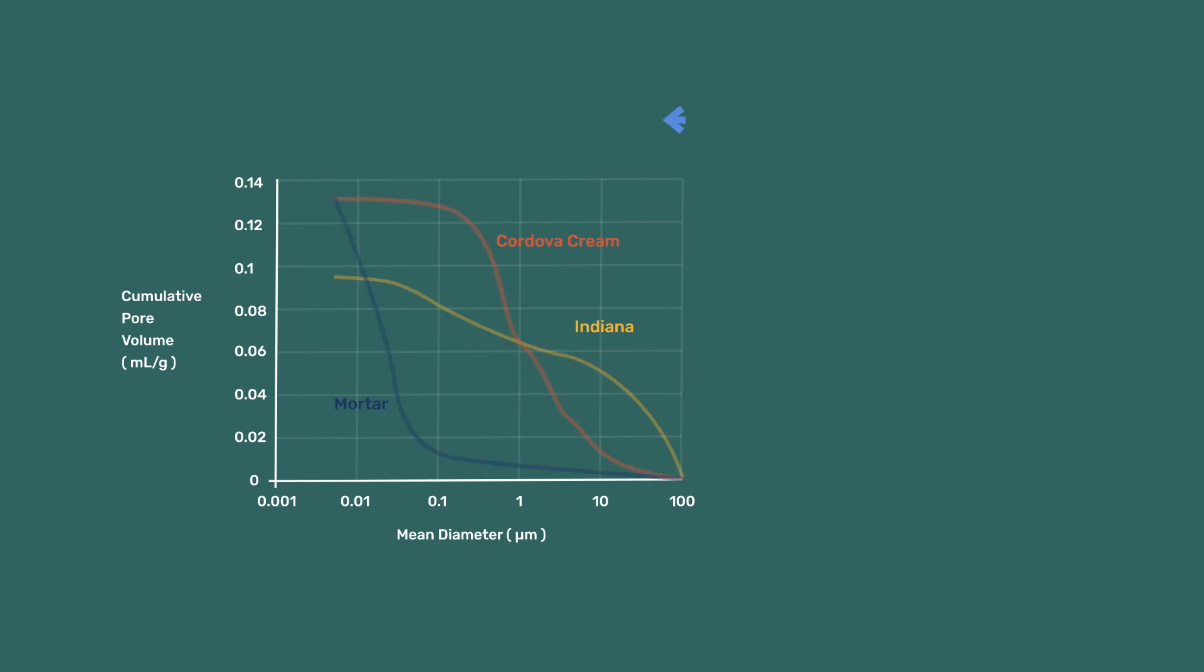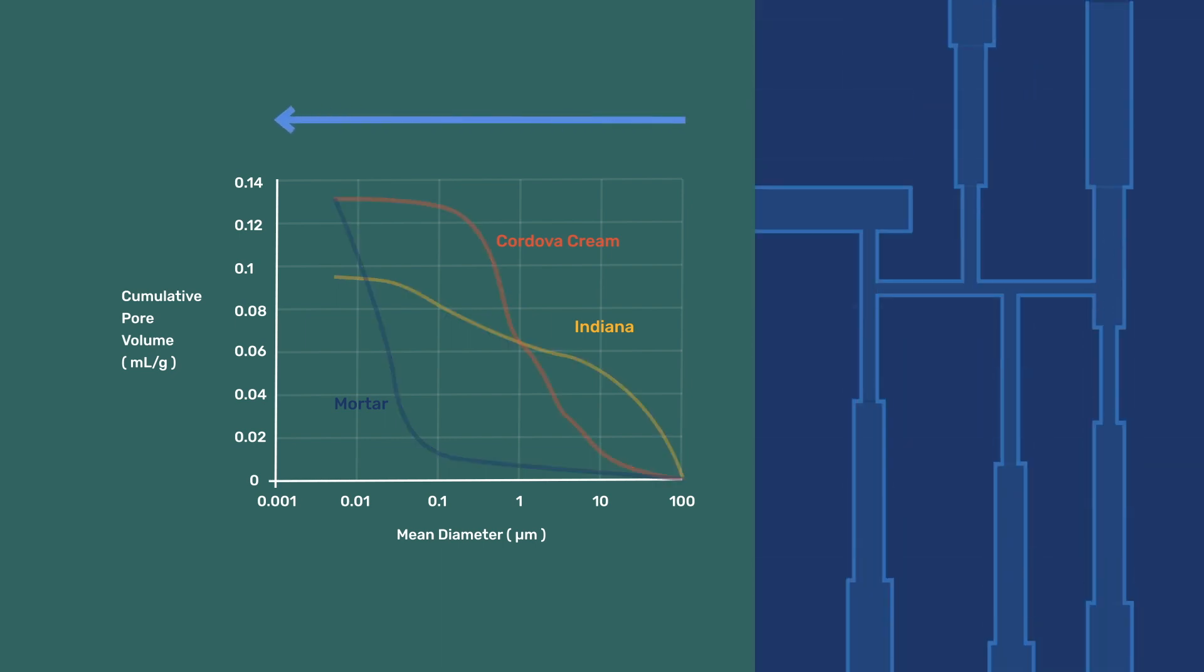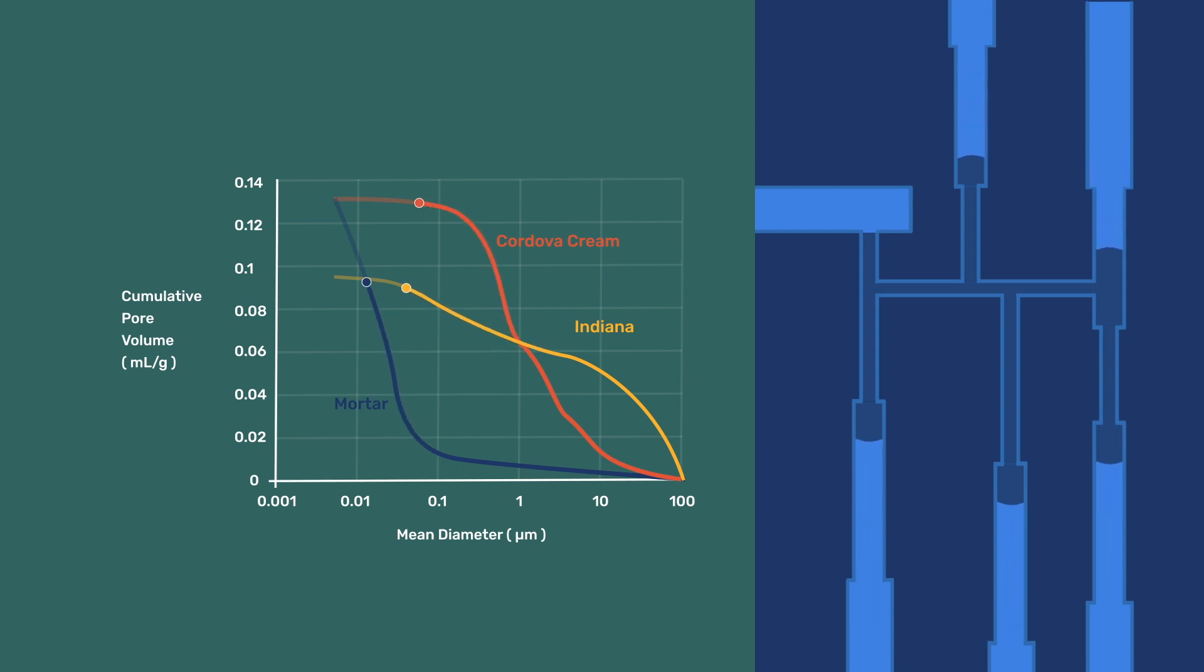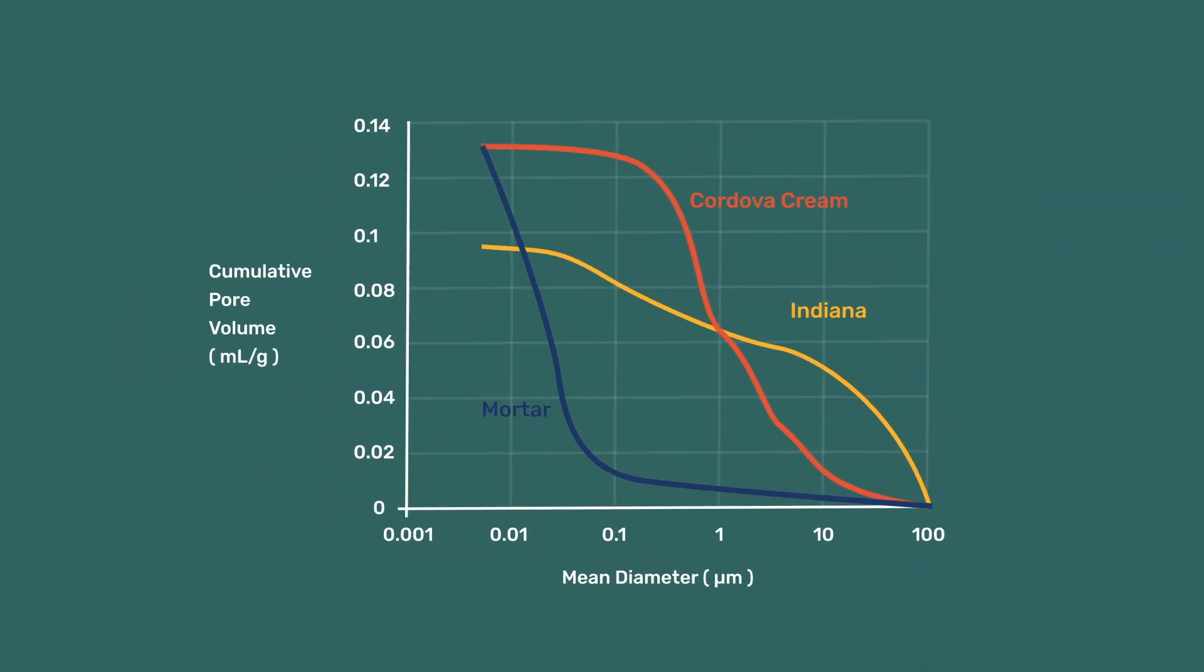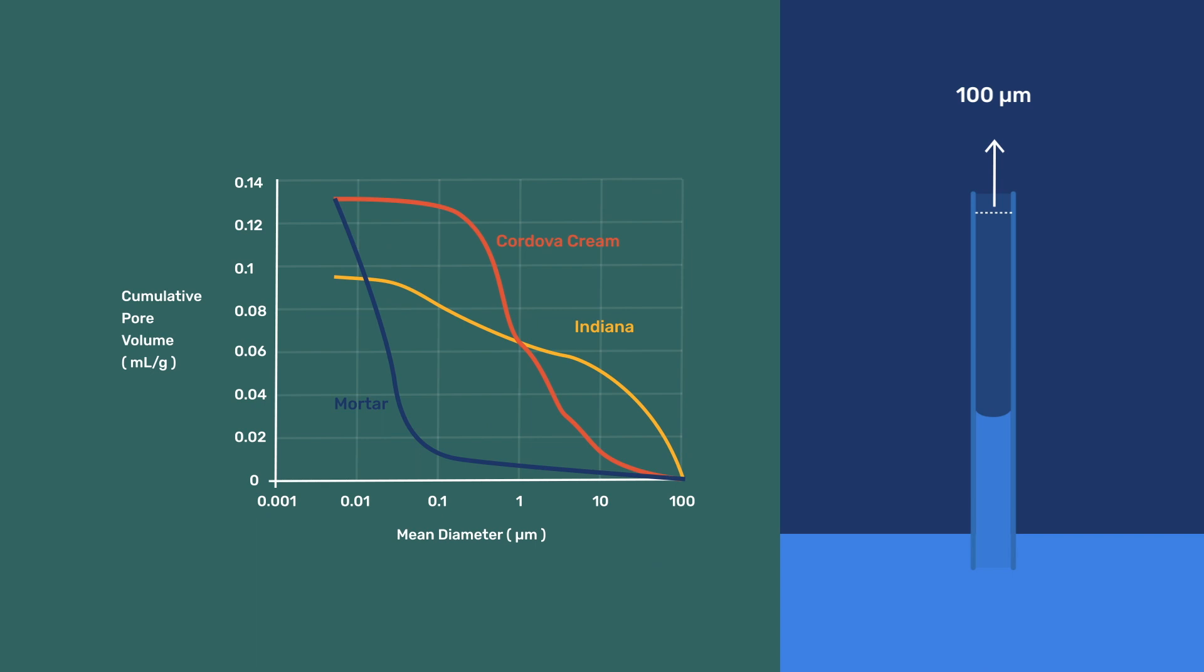It shows, from right to left, the amount of water that would fill these materials if, starting from a fully dry state, they gradually filled with water, starting with the largest pores and progressively entering smaller and smaller pores. The value farthest to the left indicates the total volume of porosity.